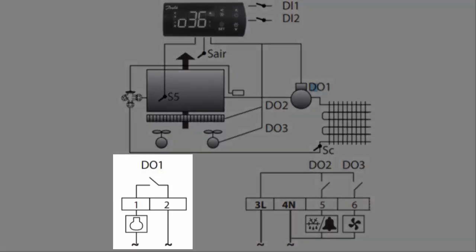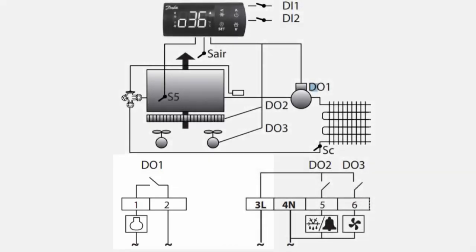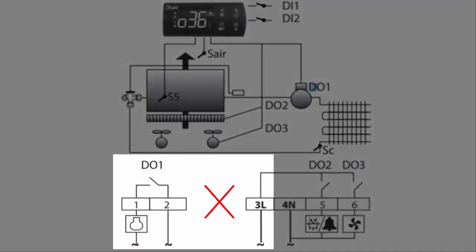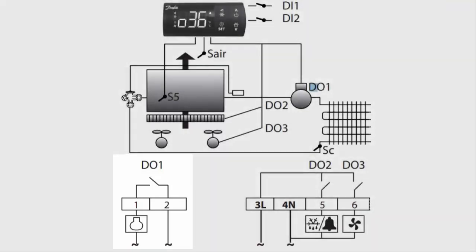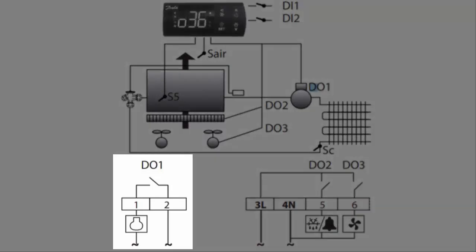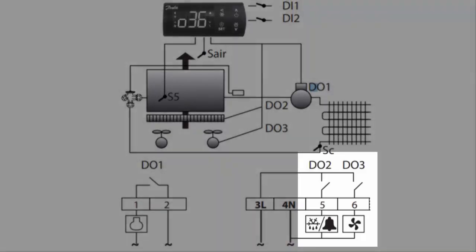DO1 terminals one and two are dry because they don't have voltage intrinsically applied within the controller itself. You have to connect to either terminal one or two with a constant power supply and feed it through to the device. To simplify: DO1 is dry, DO2 and DO3 are wet.